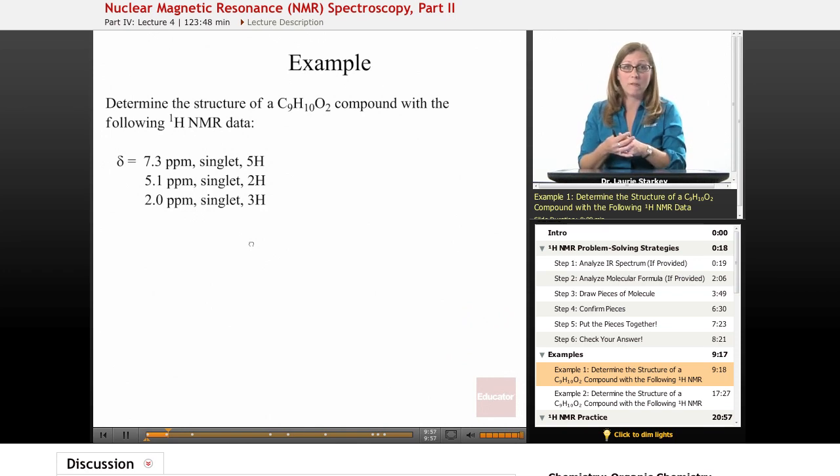Our first step is to look at the IR spectrum and see what we can figure out from that, but we're not going to be looking at any IRs today. A lot of problems you'll see will have IR combined with NMR as an additional clue for functional groups, but in all these cases we're going to be skipping the IR.